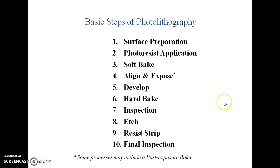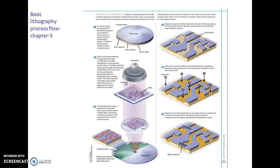Next is etching — removing the unwanted material. It can be dry etching or wet etching, chosen depending on the application. Next is photoresist stripping, which means removal of the photoresist. Finally, inspecting — we inspect to confirm the output is what we expect. These are all the steps of photolithography.